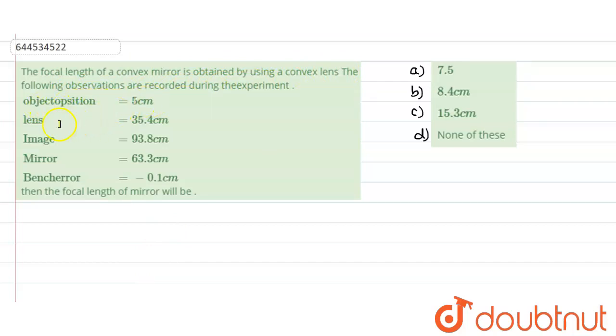Object position 5 cm, lens position 35.4, image is 93.8 cm. Mirror location is 63.3 cm and the bench error is given as negative 0.1 cm. We need to determine what is the focal length of the mirror.